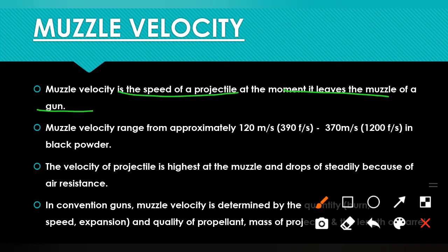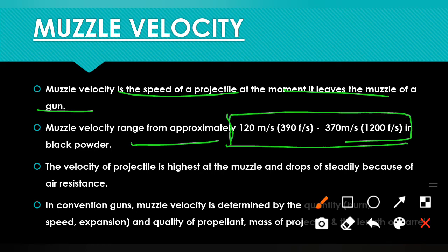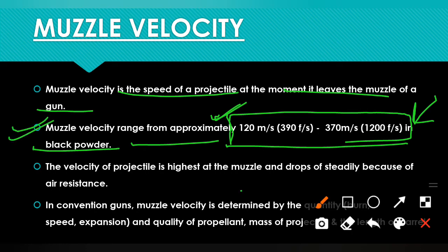If we talk about the range, muzzle velocity ranges from approximately 120 to 370 meters per second, or about 390 feet per second. These two units — feet per second and meters per second — are important for exams. This velocity is relevant when using black powder cartridge cases. The velocity of the projectile is highest at the muzzle end and drops off steadily due to air resistance.